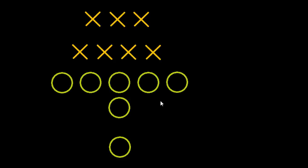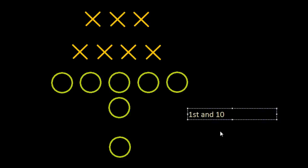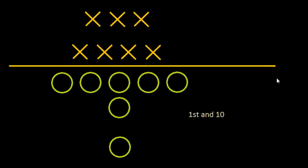If you turn on a game on TV, before every play — or before the majority of plays — you're going to hear two numbers. Somebody will say something like 'first and ten.' So we're going to look at what that means. There's an imaginary line in the middle where the ball is placed on the field, separating the offense and the defense. This line is called the line of scrimmage.